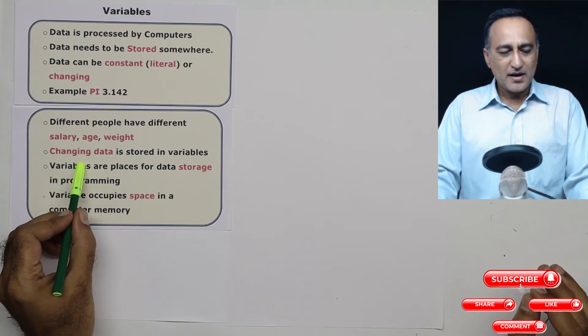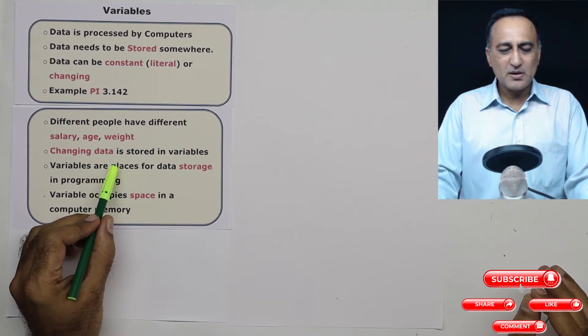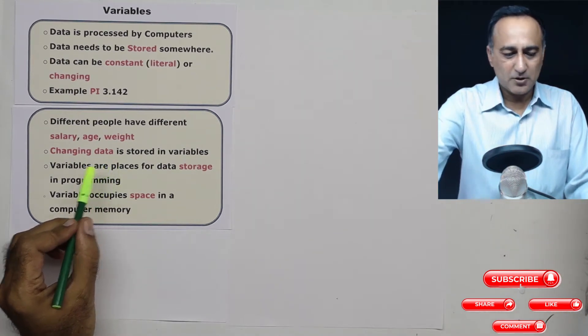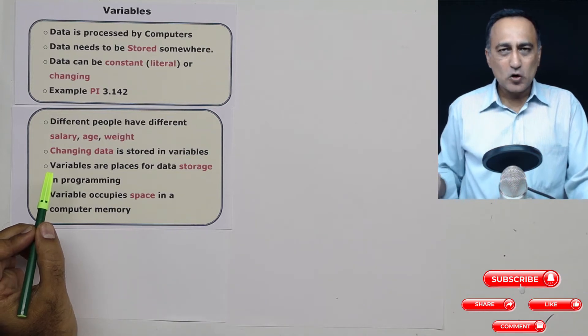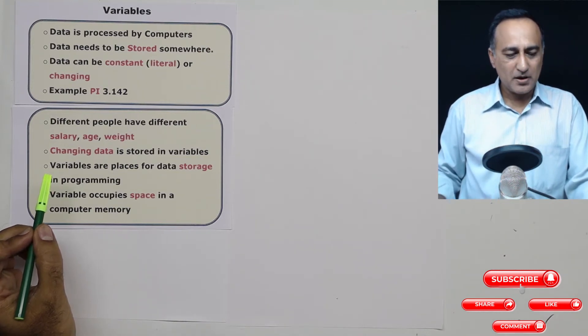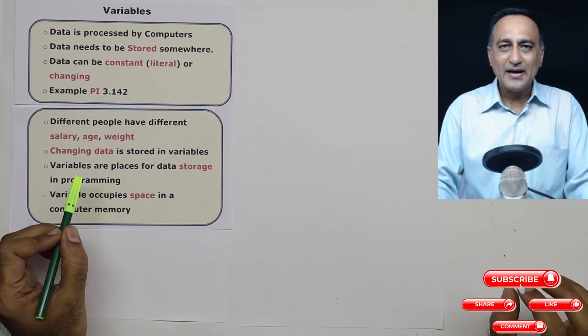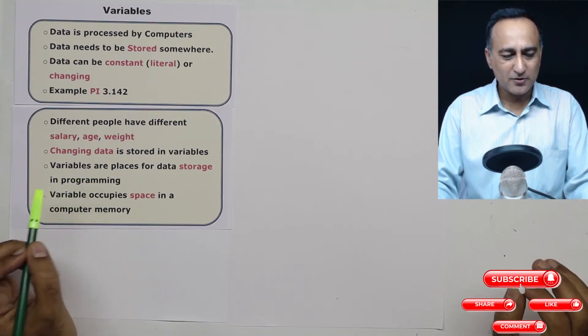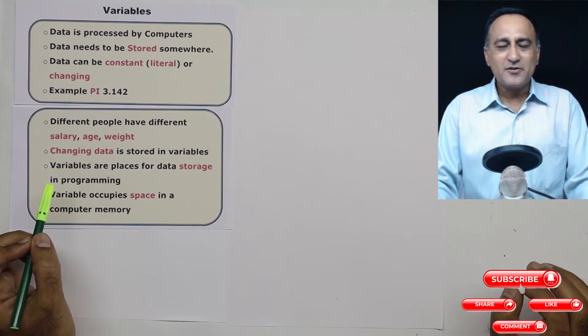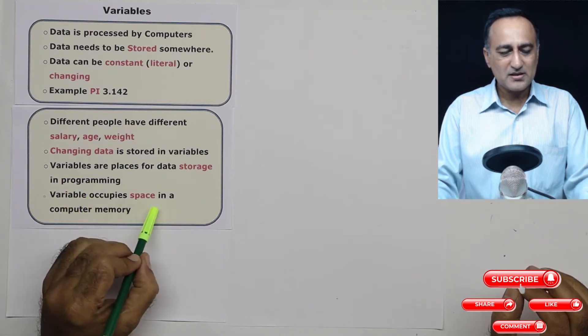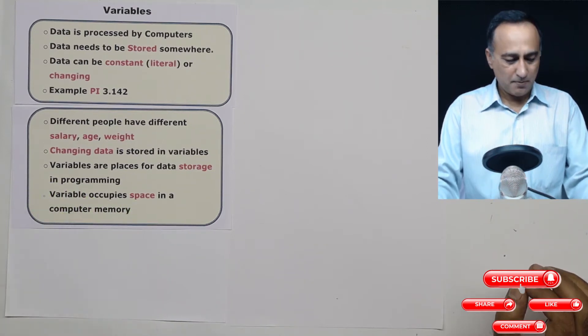As I remarked, changing data is stored in a memory location called as variable. Variables are the location or places in the computer memory which is used for temporary data storage in the main memory of the computer. Since a variable refers to a memory location of a computer, variables occupy certain space in the computer memory.